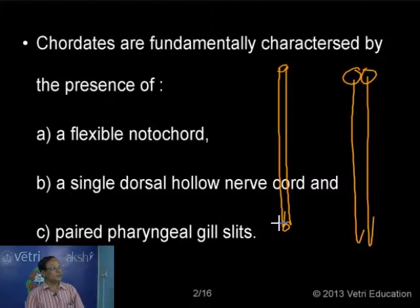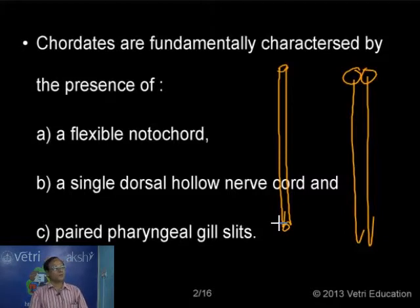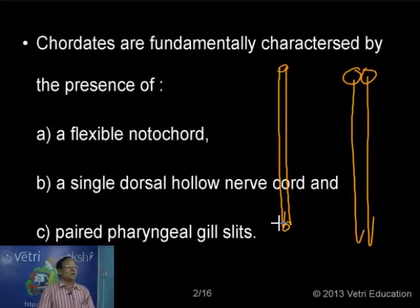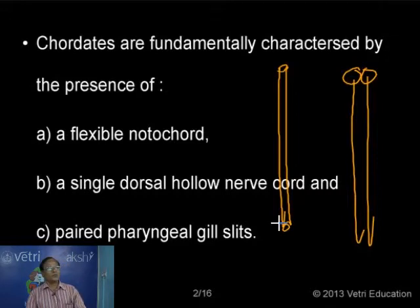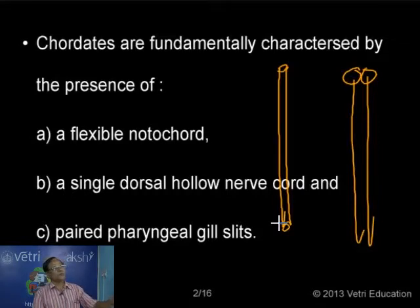That is the main difference between the invertebrate and the chordate. A single, dorsal, tubular or hollow nerve cord is present in all the chordates, including human beings. These are all three basic characteristics by which one can include an animal in the chordates. If we observe these three characteristics in an animal, then we can say that animal is a chordate.